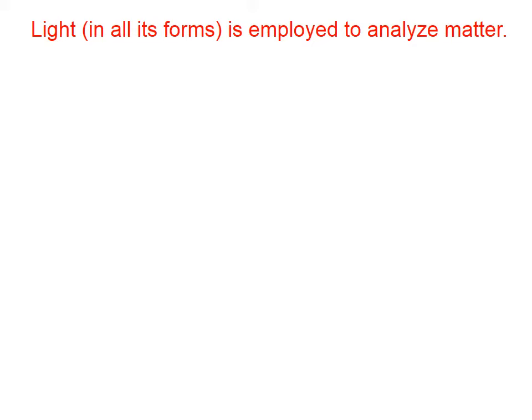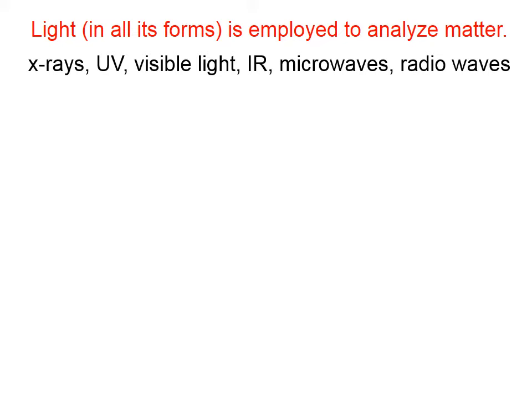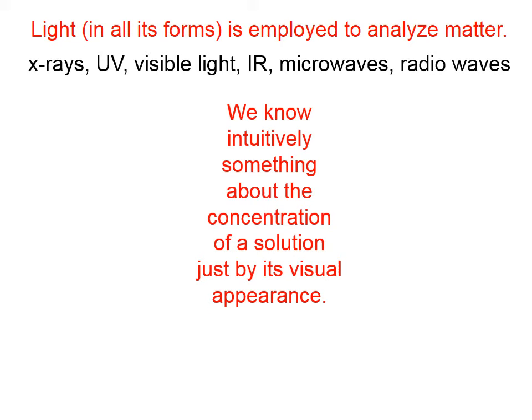Light in all its forms is employed to analyze matter. We can learn things about matter using all of the various wavelengths of light. Some wavelengths are better for learning some things, and other wavelengths are better for learning other things, but all forms of light have been employed by scientists in order to learn things about the universe.